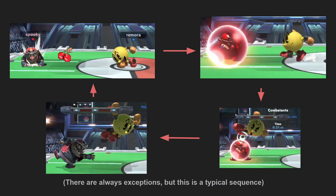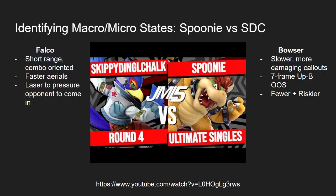We're going to have a look at another set: Spoonie versus Skippy Dinglechalk, some of the best we've got here in JML. Let's have a look more in terms of the lens of their characters. Wario and Pac-Man are both sort of brawler-type characters that have good air mobility, fairly decent aerials, and can contest that area of playing close and mixing you up.